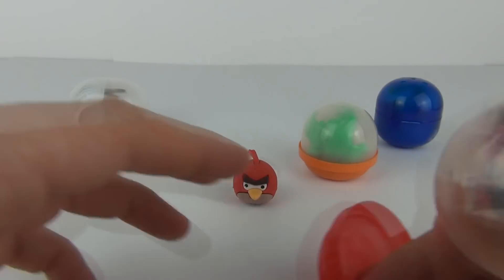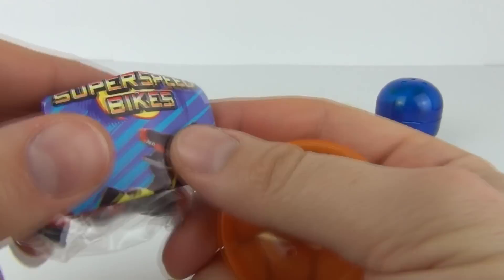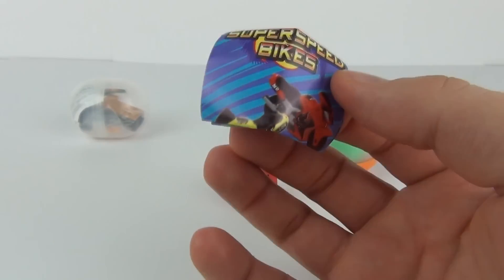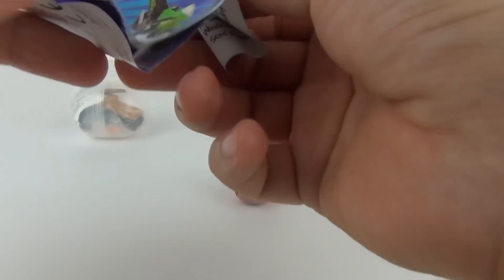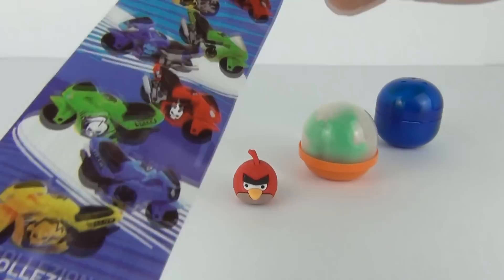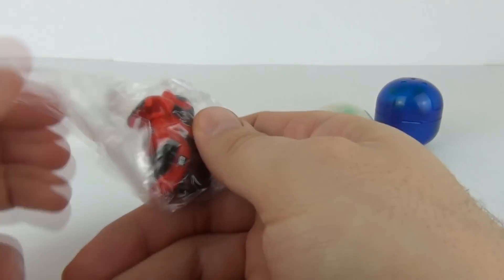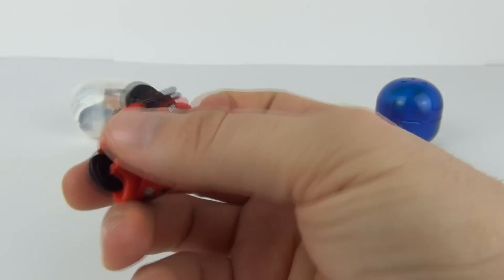So next up we shall go with this one, this orange one, and this is a super speed bike. Let's open this up and there you can see all these super speed bikes from Team Hot Wheels. And there are 8 different bikes to collect and we have the red one.